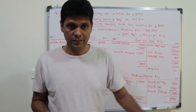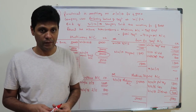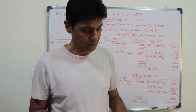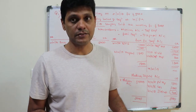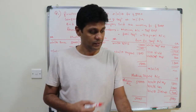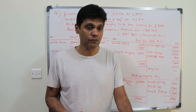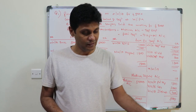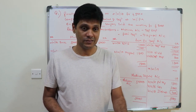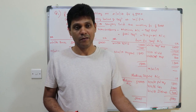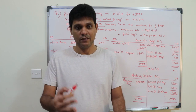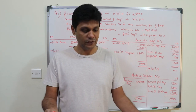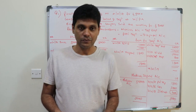Next time we will discuss the next chapter, which is the trial balance, along with correction of errors. After that, we will cover control accounts and then bank reconciliation statement. We will cover all these chapters one by one in the next videos. Thank you, we'll wind up the class.